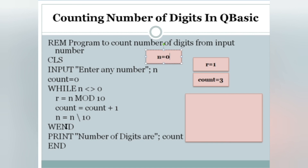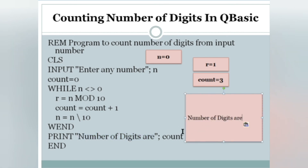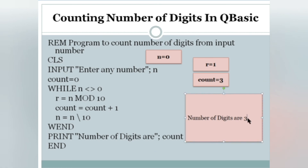It reaches WEND and goes back to check the condition: N not equals to zero — but N is zero, so zero not equals to zero is false. The loop exits and goes to the line just after WEND, which is PRINT. We print 'Number of digits are' followed by count, which holds the value 3. So for input 123, the output is: Number of digits are 3.